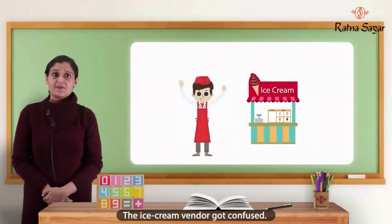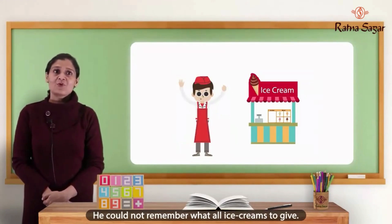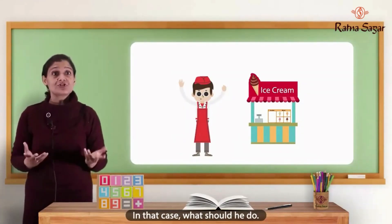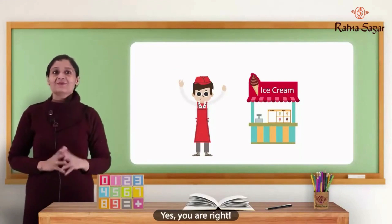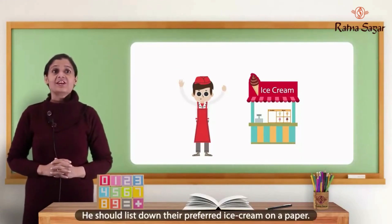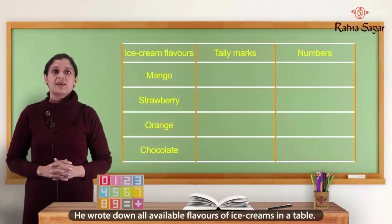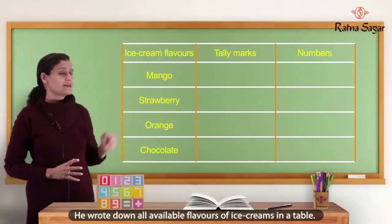The ice cream vendor got confused. He could not remember what all ice creams to give. In that case, what should he do? Yes, you are right — he should list down their preferred ice cream on a paper. He wrote down all the available flavors of ice creams in a table.